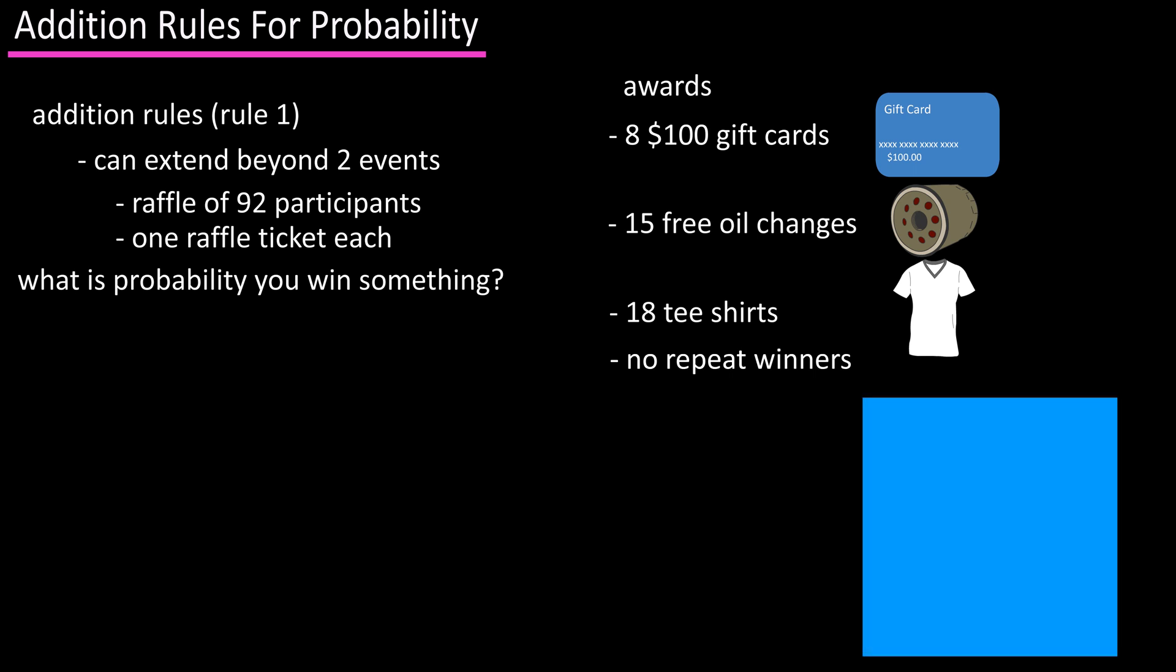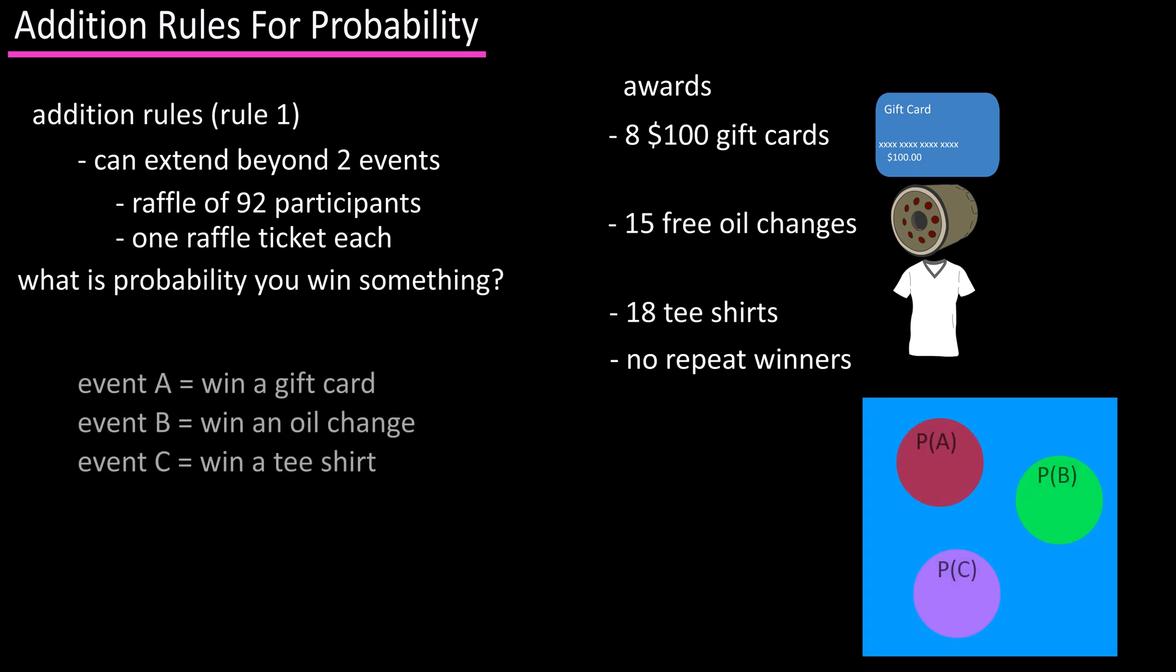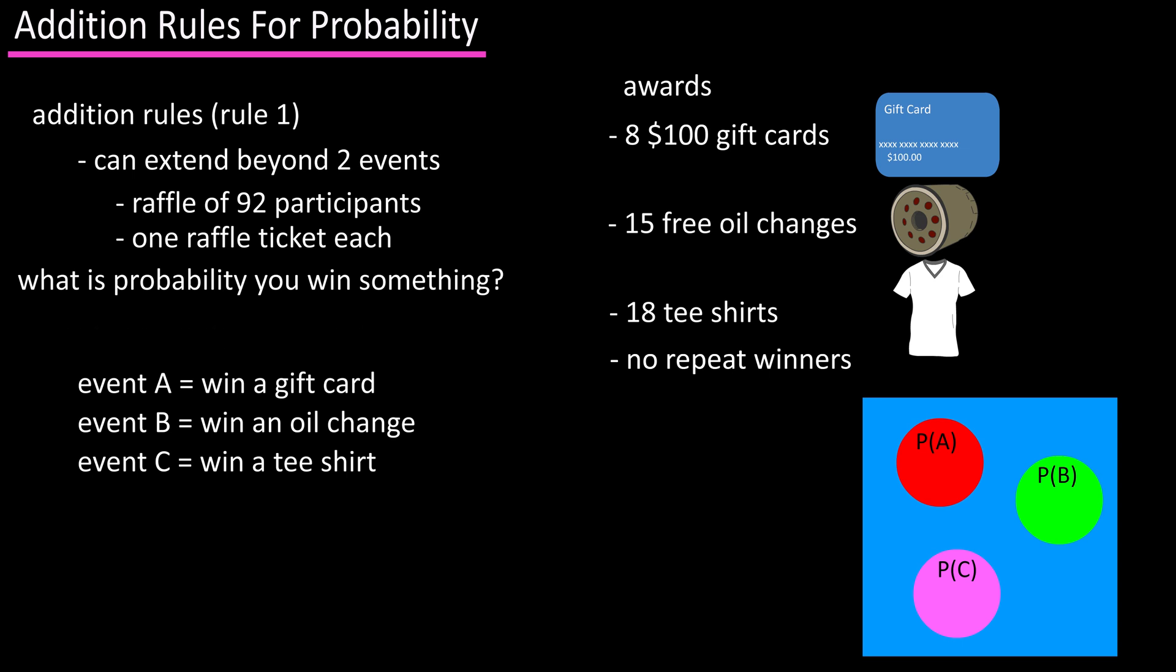So what is the probability that you win something? I will also fill in this diagram as we go through the math. We can assign the $100 gift cards as event A, the oil changes as event B, and the t-shirts as event C. And since there are no repeat winners, these events are mutually exclusive. Our equation is P(A or B or C) = P(A) + P(B) + P(C).